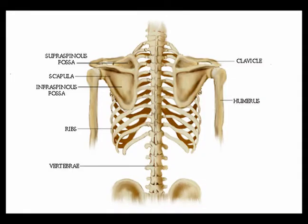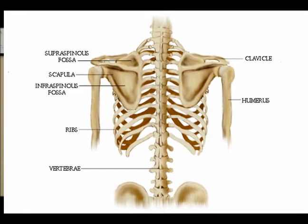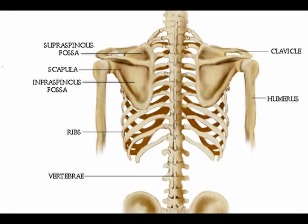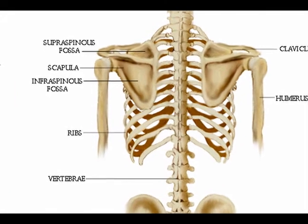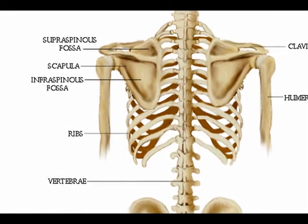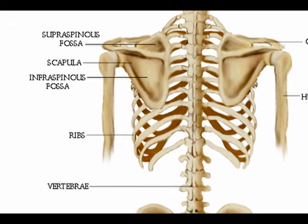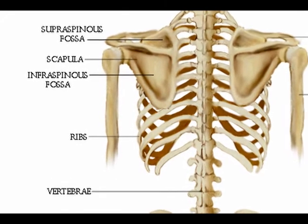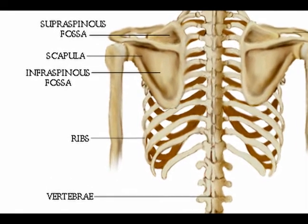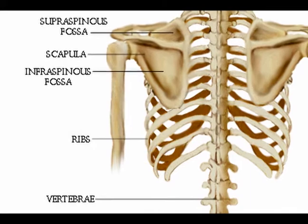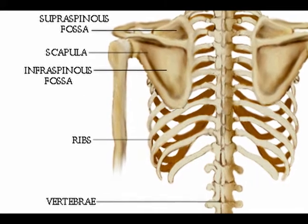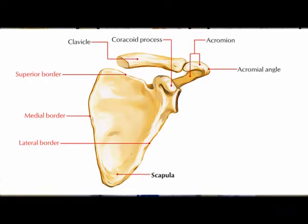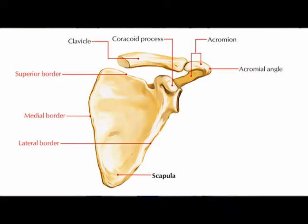The scapula is the medical name for the shoulder blade. The scapula is a very important bone for upper body motion and function. It is located on the posterior lateral superior aspect of the ribcage and is fairly triangular shaped.